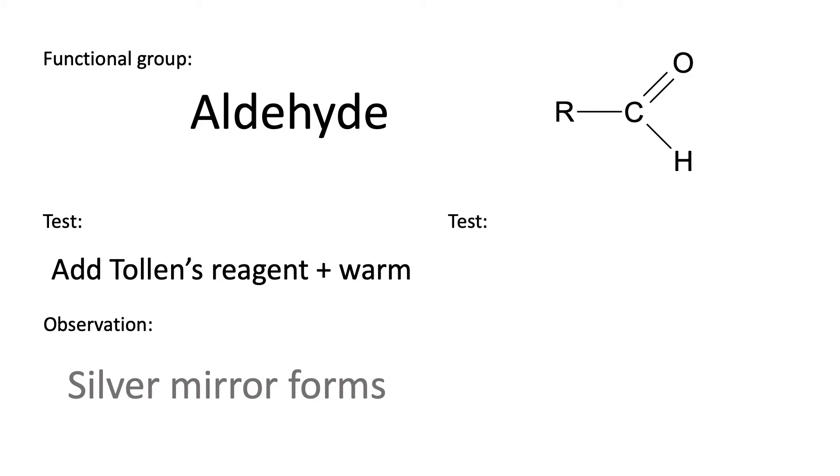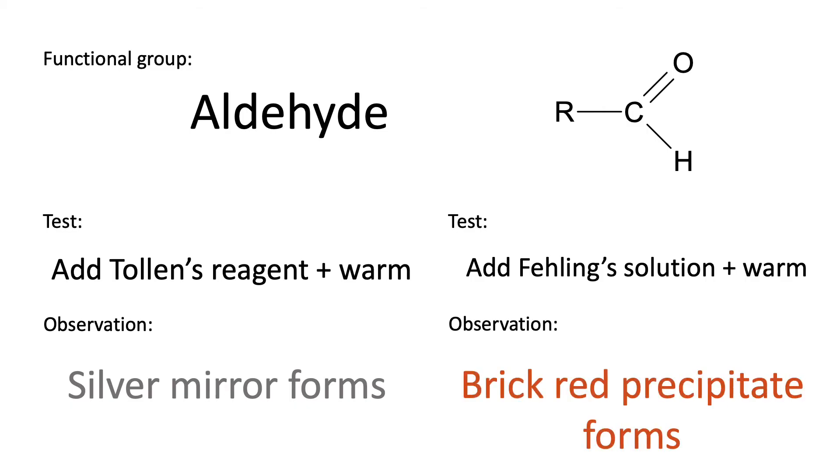The second test that we need to be aware of is to add Fehling solution and to warm, and the observation we get here is that our blue coloured Fehling solution forms a brick red coloured precipitate. We do need to be aware of both tests because although they'll ask us only to suggest one test, they may give us the results of either test and expect us to be able to interpret it in terms of what functional group is present.